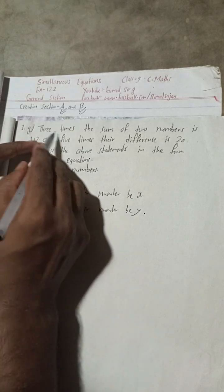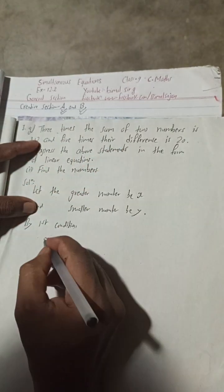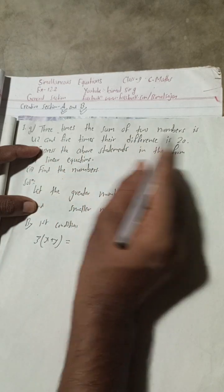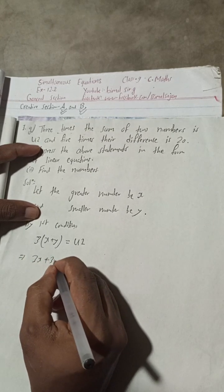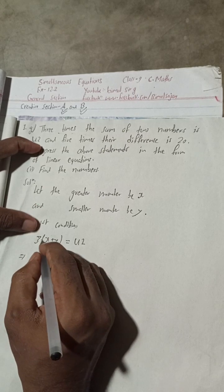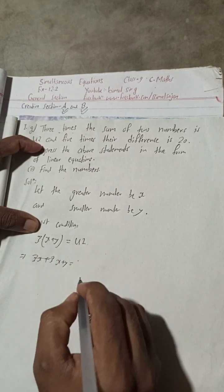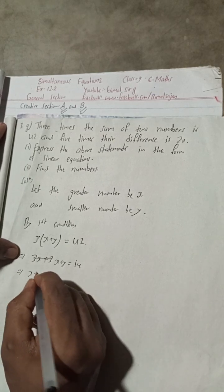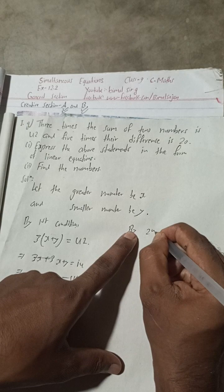By the first condition: three times the sum of two numbers is 42. The sum of the two numbers is x plus y, and three times this sum equals 42. Dividing both sides by 3 gives x plus y equals 14. This is Equation 1.